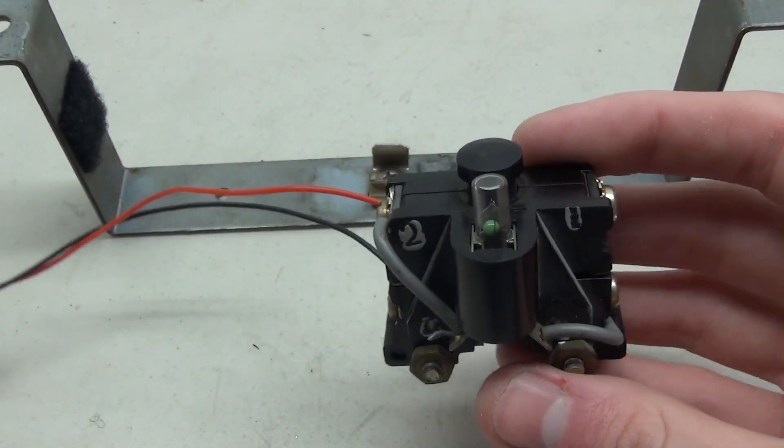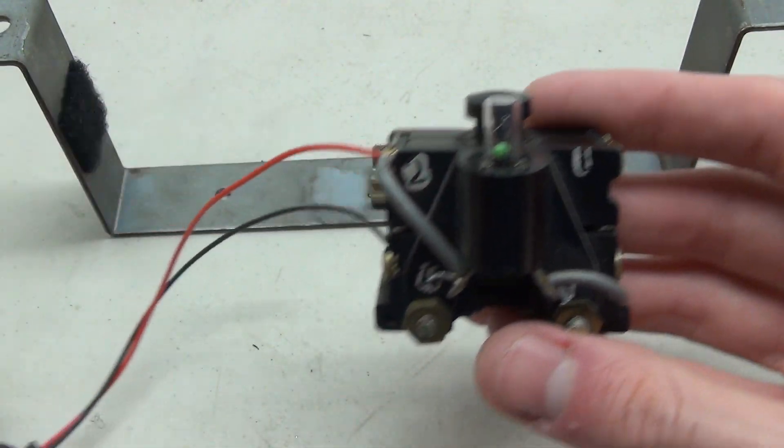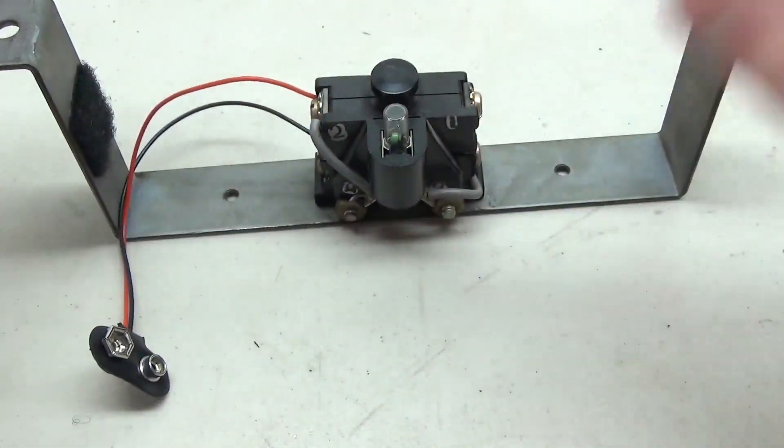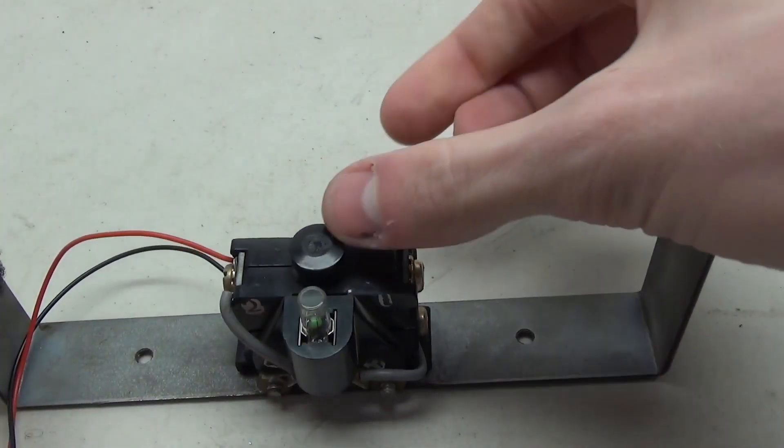All right, so here's the completed circuit. Very simple. We've got our bulb in here, our little 9 volt battery on the side. So let's clip this on here. And after hooking up our battery, let's give it a test.